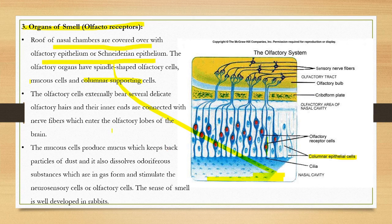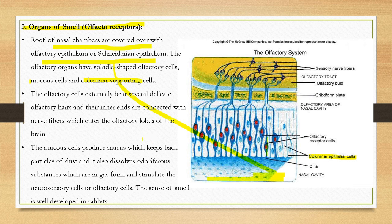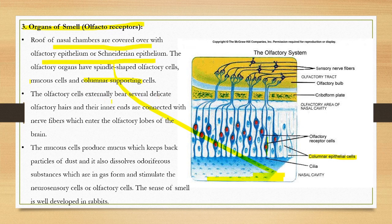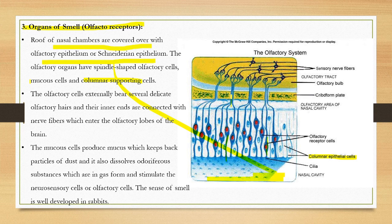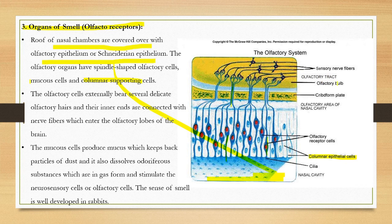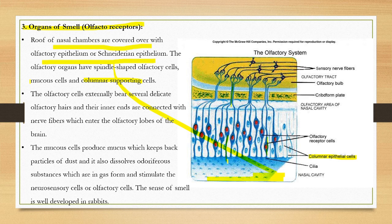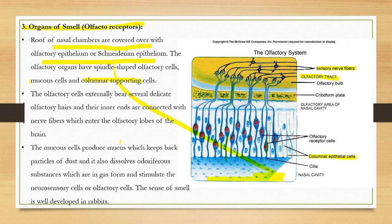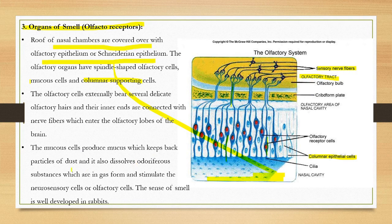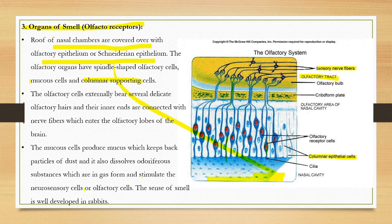Odorous chemicals dissolve in the mucus. The olfactory cells externally have delicate olfactory hairs, and their ends are connected with nerve fibers. The olfactory cells at the posterior end are connected to the olfactory bulb and olfactory tract. So cilia of olfactory cells connect through axonal ends to the olfactory tract or sensory nerve fibers. The mucus cells produce mucus which traps particles of dust and also dissolves odorous substances which are in gas form and stimulate the neurosecretory olfactory cells.